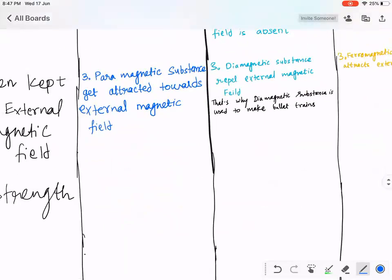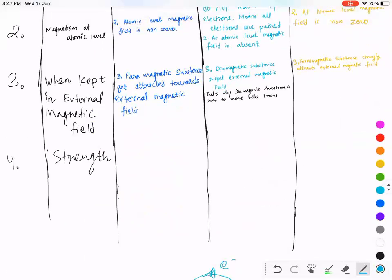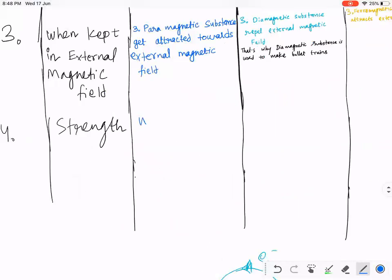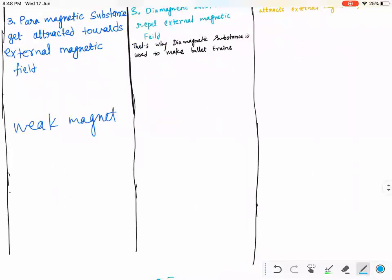The strongest is diamagnetic — diamagnetic is the strongest. The weakest magnet is paramagnetic — paramagnetic materials represent a weak magnetic force. They are simply weak magnets. The most strongest magnet is diamagnetic, that is why we use them in bullet trains.